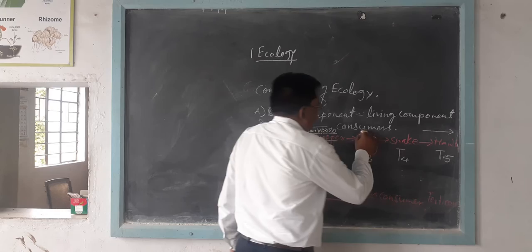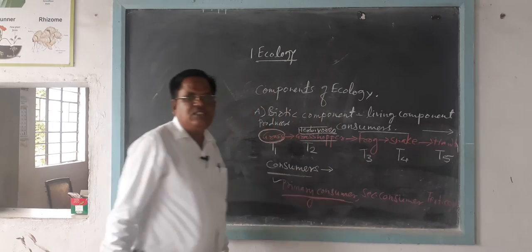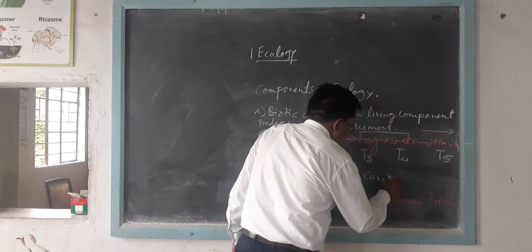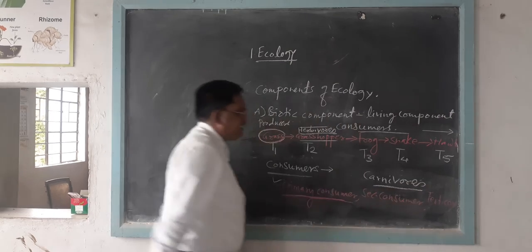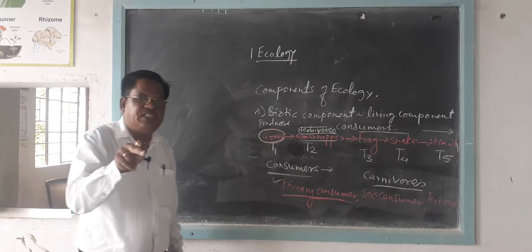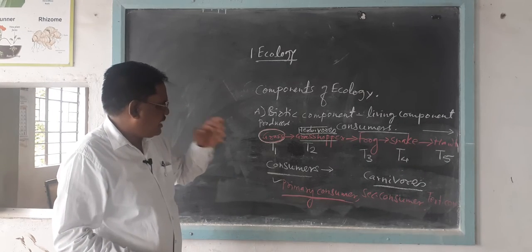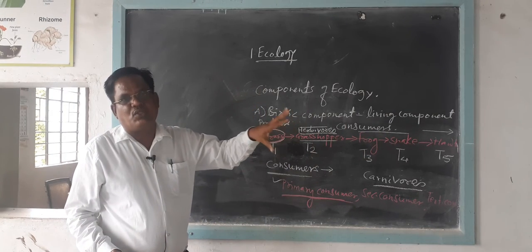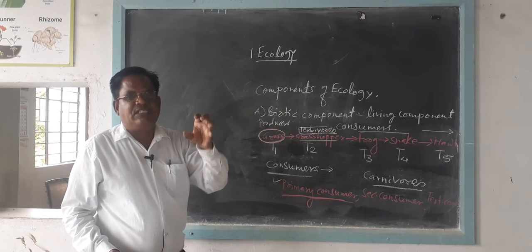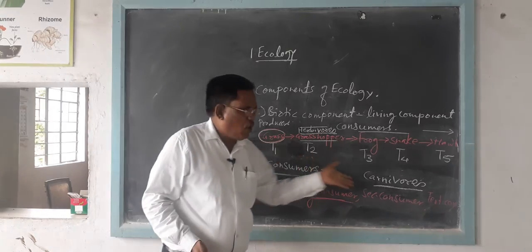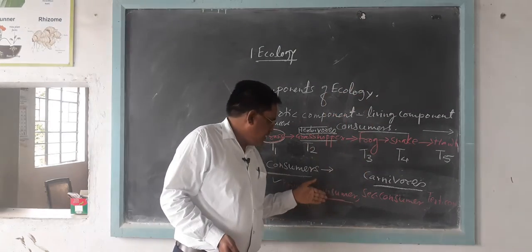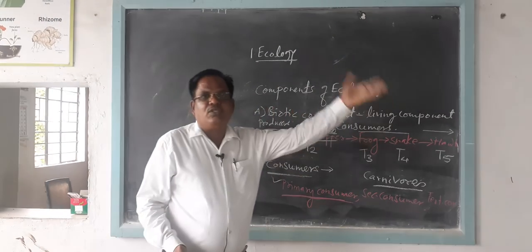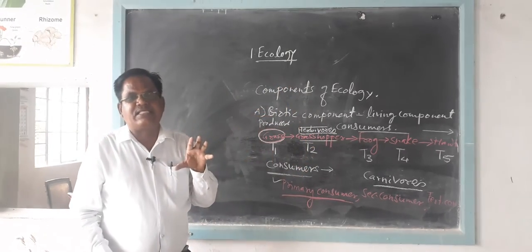From frog to hawk, these are all carnivores — secondary and tertiary consumers. They take non-vegetarian material, meaning flesh. Frog to snake are carnivores as secondary and tertiary consumers.